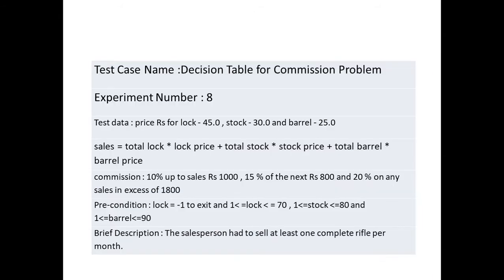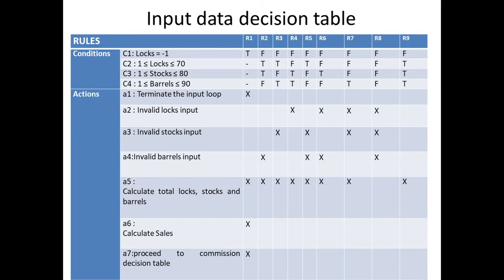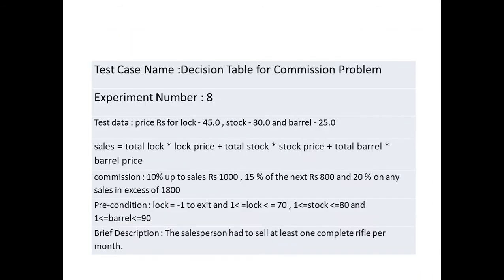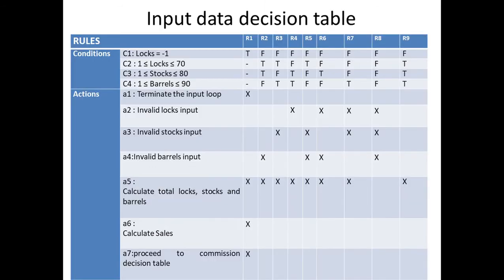This is the input data decision table. The different input data we are taking are lock, stock, barrel, total locks, total stocks, total barrels, sales, and commission. With respect to these, we need to write the conditions and the actions. The first condition is locks equal to minus one — that is, the salesperson has finished with the selling part and is ready to calculate total locks, stocks, barrels, and commission.